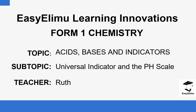Welcome to Easy Elim Learning Simplified. My name is Ruth, and today we are going to be discussing acid bases and indicators — specifically the universal indicator and the pH scale. Previously we talked about commercial indicators and mentioned some examples: phenolphthalein, litmus paper, and methyl orange, and the colors they produce in acid, base, and neutral solutions.